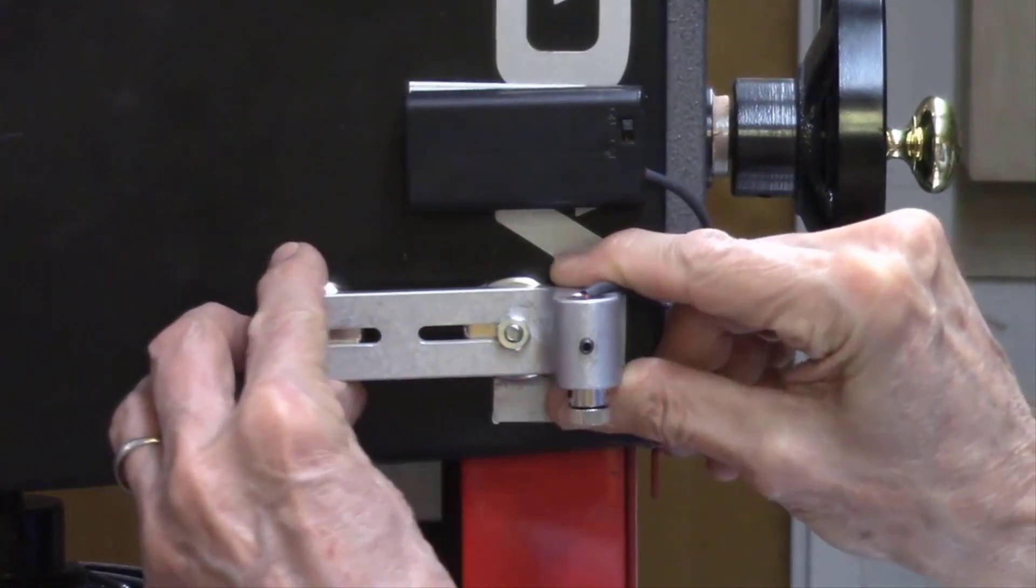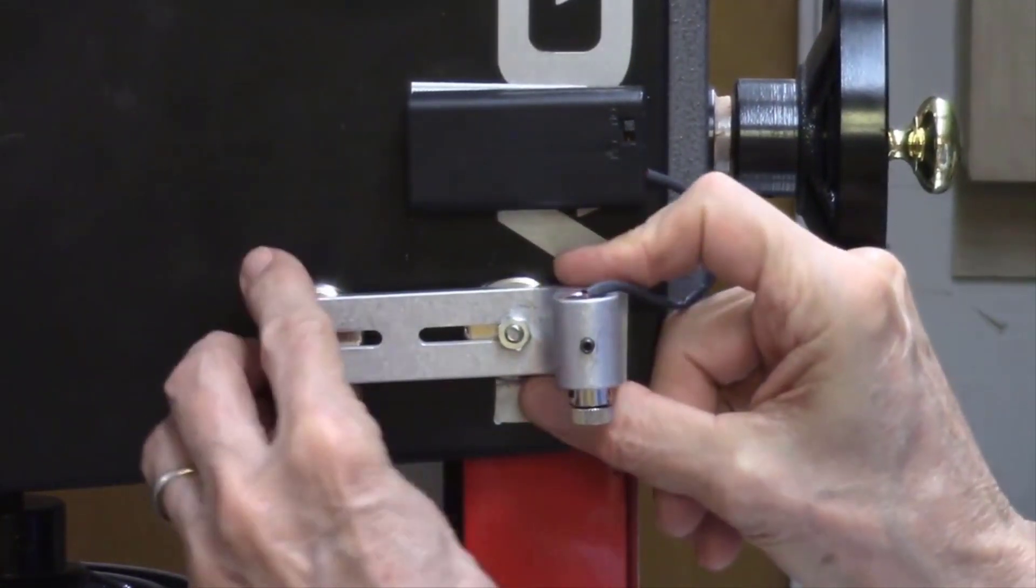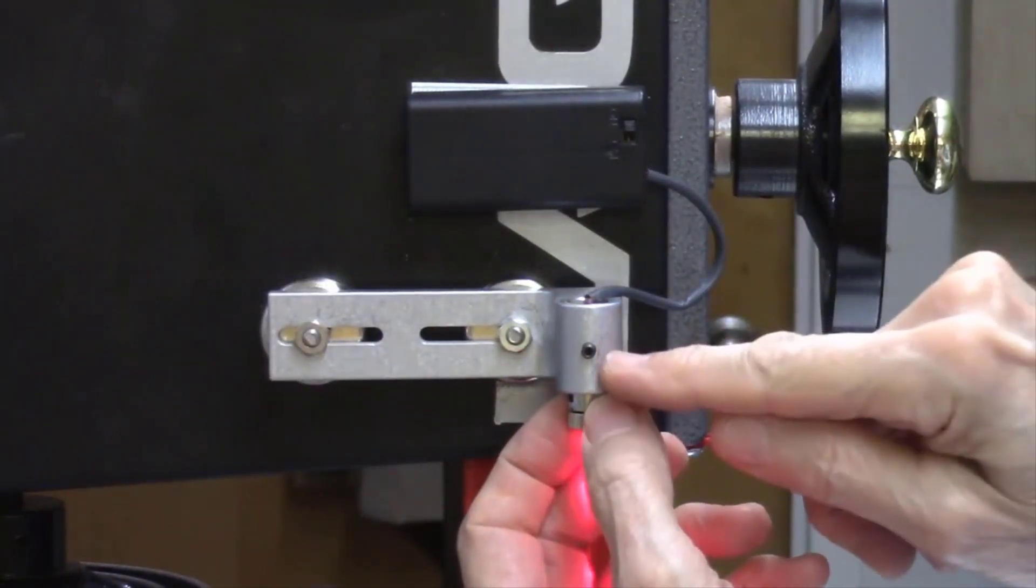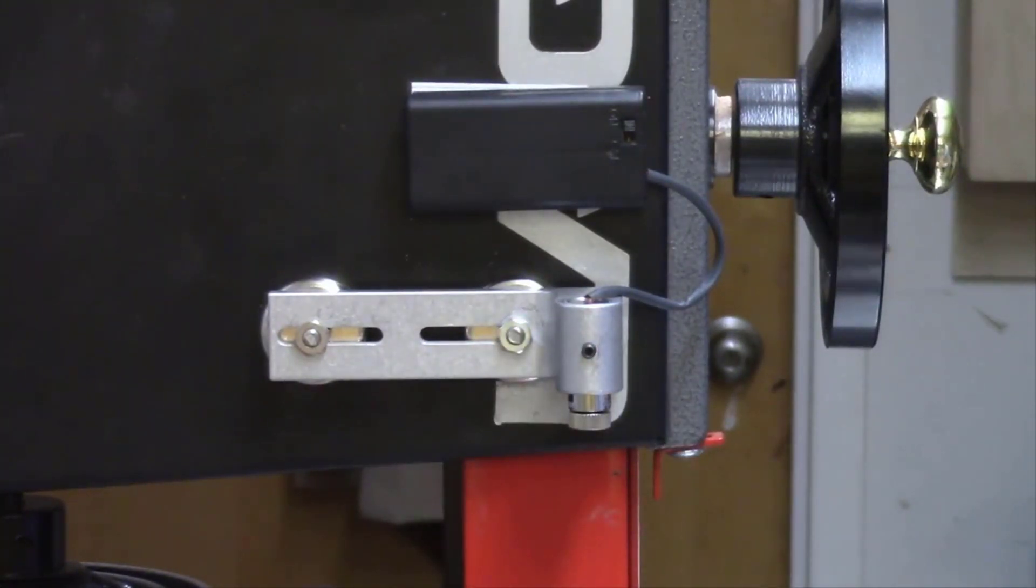First of all you can move the L bracket left or right to move the beam. You can also rotate this. And the third rotation is you can loosen the set screw on the laser and rotate the laser beam and then lock it back in place. Use those 3 degrees of motion to align the laser beam perfectly.